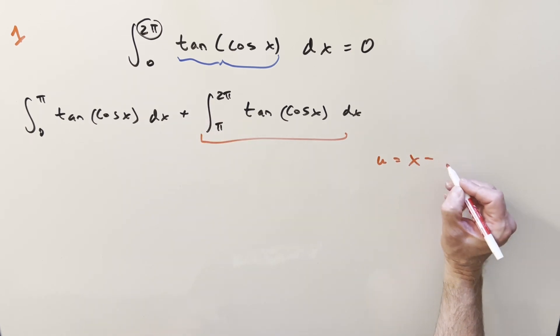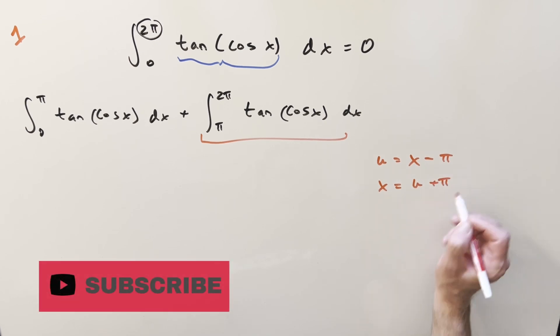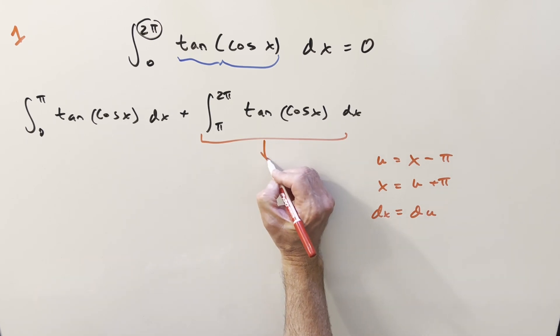So for that, what we just need to do is take x and subtract pi from it. We can also solve for our value for x. So x is going to be u plus pi. Take a derivative. We have dx is going to be equal to du.